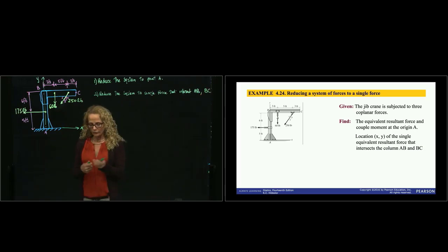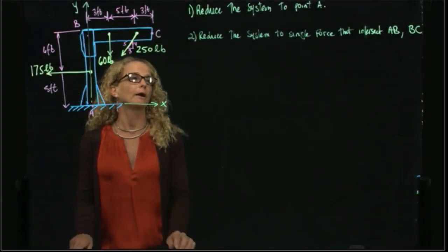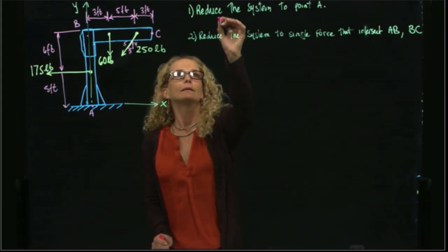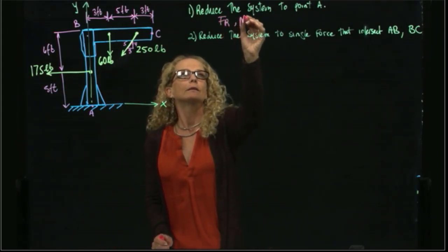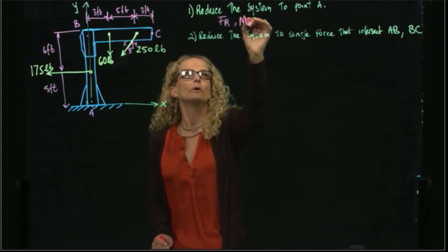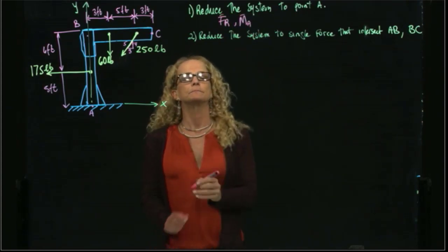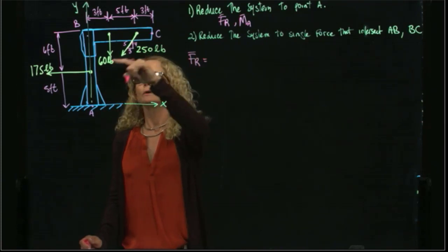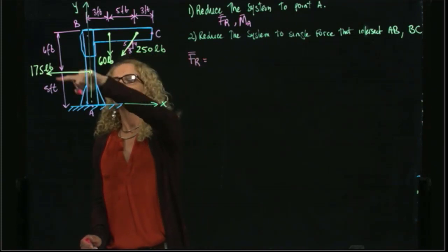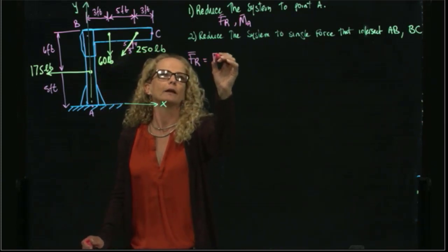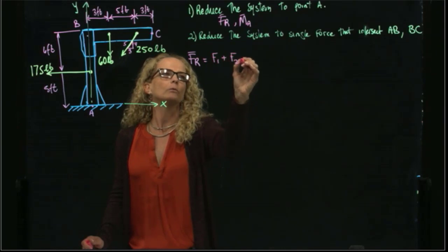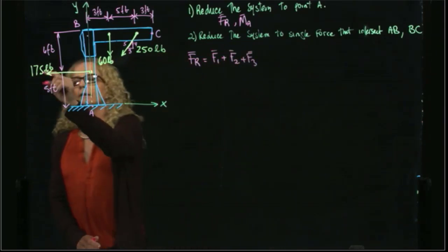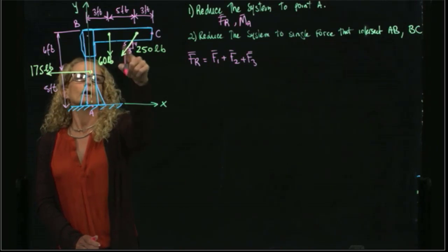So let's start for part A, which means finding the resultant force and the resultant moment with respect to A. To find the resultant force, we know that we have to add all these forces together. So it will be F1 plus F2 plus F3. This is F1, F2, and F3.